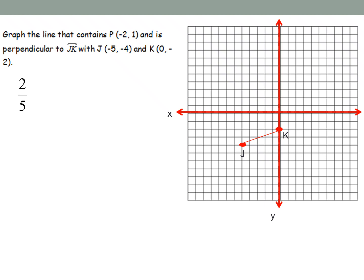So I start by getting the slope of the current line I have. So JK has a slope of 2 fifths. I know that perpendicular lines have negative reciprocal slopes, so I write the negative reciprocal of that.